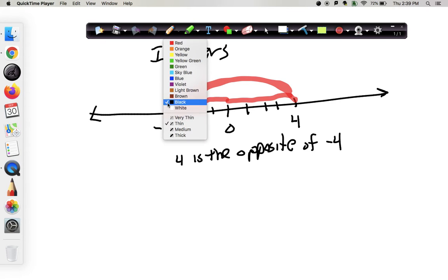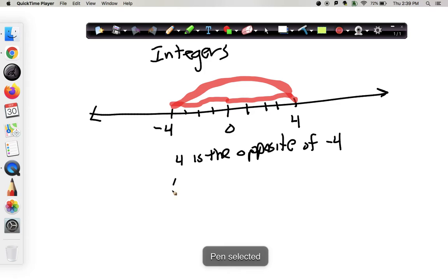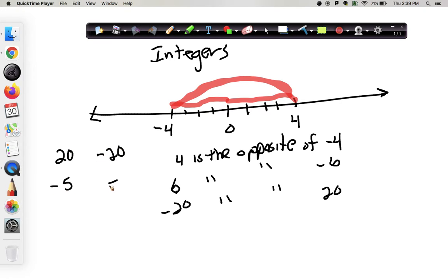So a couple more examples: 6 and negative 6 are opposites, or negative 20 is the opposite of 20. In class we said it out loud. So if you're watching this trying to make up because you missed class, you might actually just say these. Say 20 and negative 20 are opposites. Negative 5 and 5 are opposites. 10 and negative 10 are opposites. Negative 12 and 12. So opposites are across from 0.